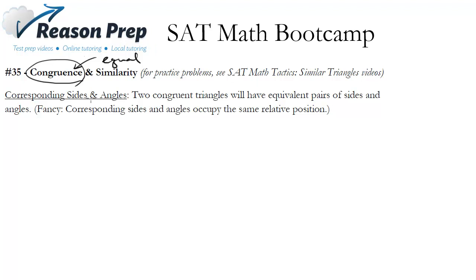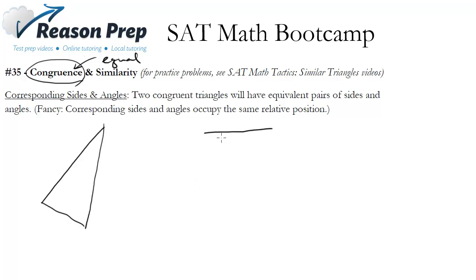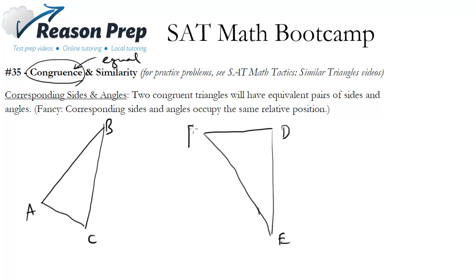One important point that does come out of this is corresponding sides and angles. Let's imagine I've got two triangles which are alleged to be congruent — triangle ABC and triangle DEF. If I rotated the triangle on the right and lined it up perfectly, they'd match. Just because a triangle is rotated doesn't mean it's not congruent. Side BC corresponds with EF. The definition of corresponding sides is that two congruent triangles have equivalent pairs of sides and angles, occupying the same relative position.